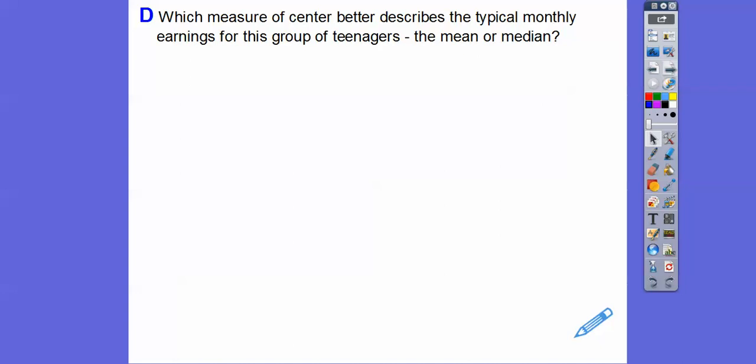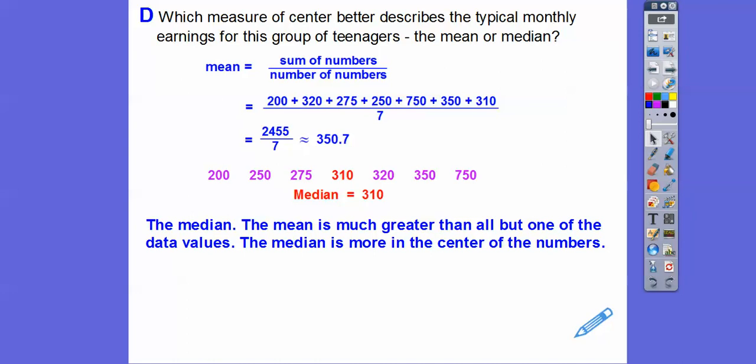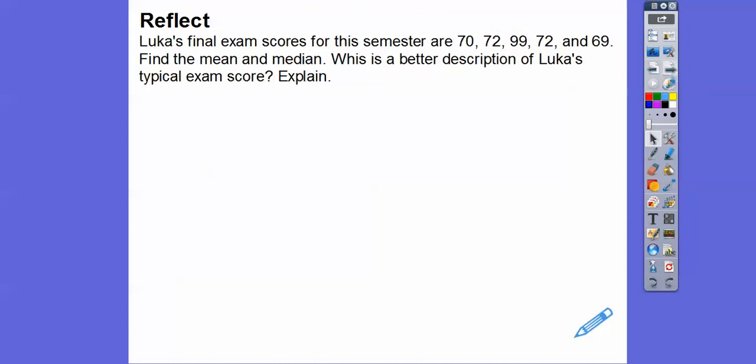So let's see. So in fact, housing prices, they always list the median value housing prices because it doesn't get affected by the very, very, very rich, rich million dollar homes in the area. If we did the mean average of housing prices in newspapers, people would think, I can't move over there. That's just too much money. So they always do the median because the mean gets pulled towards those big, big numbers right there. So which measure of center best describes the typical monthly earnings for this group, the mean or the median? Well, remember, there's the mean and the median right there. And so the median does because the mean is much greater than all of those data values except one. The mean is more in the center of all those numbers right there. The median is. Sorry. So the median is a better representation.